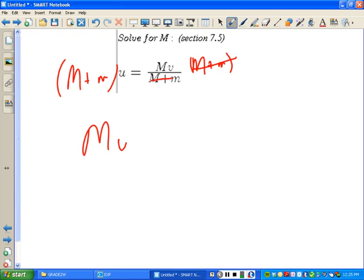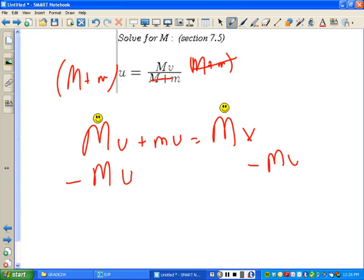What are you going to have? Big M little u plus little m little u equals big M v. Probably wasn't very nice of me to use u and v in the same problem. All right, now we are solving for big M. Where is big M located? Big M is located here and here. So we need to get those together. So we're going to subtract big M u.